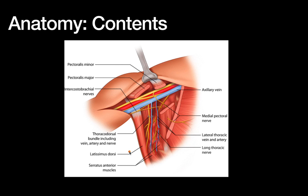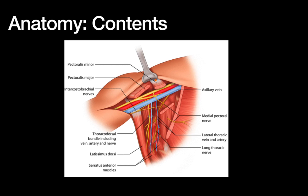To review the key landmarks of the axilla: posteriorly we have the latissimus dorsi; the chest wall with the serratus and ribs; more anterior and medial, the pectoralis muscles — pec major on the outside, pec minor deeper; and superiorly, the axillary vein. Note that behind the axillary vein there's the axillary artery and brachial plexus, but you want to stay below the axillary vein, so you should be nowhere near those structures during an axillary dissection.